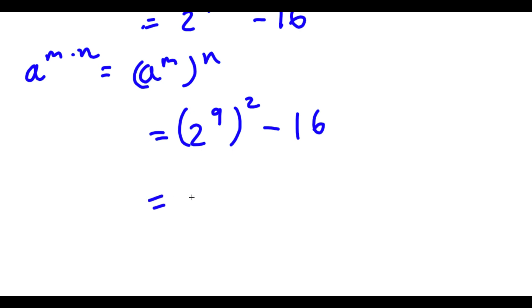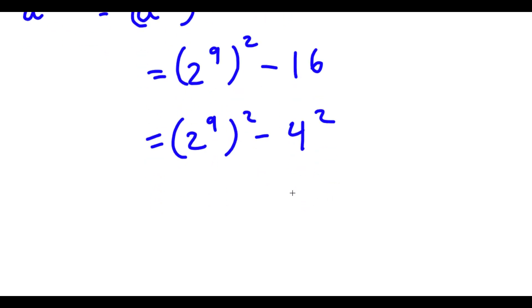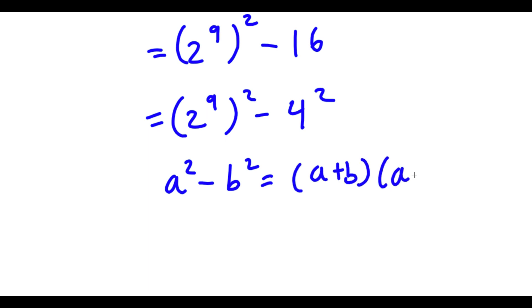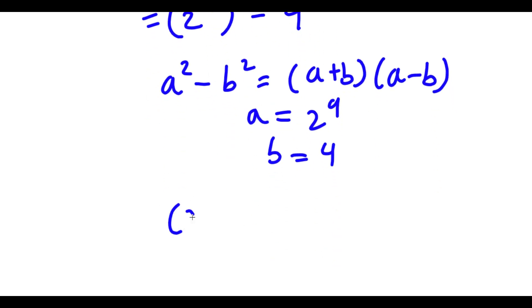Now, 16 is the same thing as 4 squared. So now I have 2 to the power of 9 to the power of 2 minus 4 squared. And now, because both of these are to the power of 2, if I have something in the form a squared minus b squared, this is equal to a plus b times a minus b. So in this case, a is equal to 2 to the power of 9 and b is equal to 4. So I have 2 to the power of 9 plus 4 times 2 to the power of 9 minus 4.